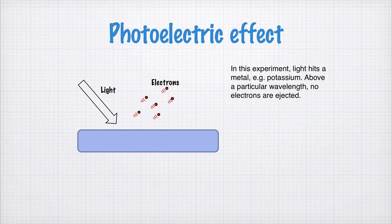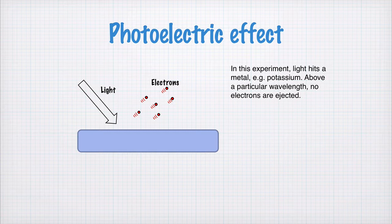But in this experiment, when light hits a metal, say potassium, above a particular wavelength no electrons are ejected. So above a particular wavelength, that means below a particular frequency.